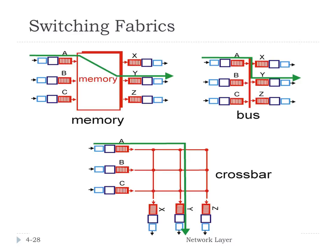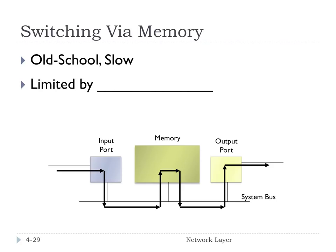This slide illustrates three different switching fabrics that may be present. First, we could use memory — basically copy a packet into memory and then copy it out to a different port. We could use a bus to actually transfer the packet from input to output. Or we could use something more complex, like a crossbar architecture, to make distinct unique connections between input and output ports.